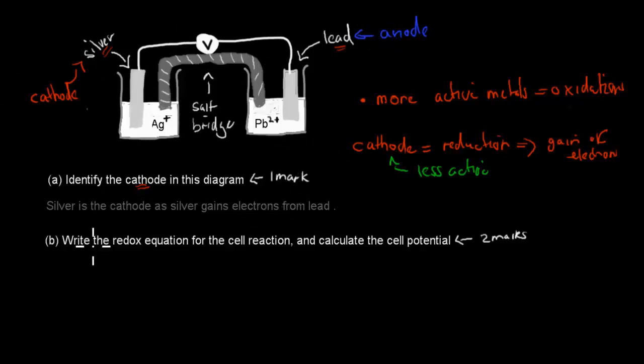And now it's asking, write the redox equation for the cell reaction and calculate the cell potential. This is two parts to this one. This is why it's worth two marks. We get one mark for each part. First, we have to write the redox equation, which just means we have to write what exactly is happening. And then we have to calculate the cell potential. We have to figure out which one loses electrons and which one gains electrons. We've said that before already. We know the lead is the anode and the silver is the cathode.